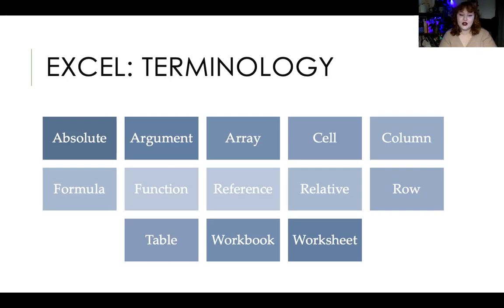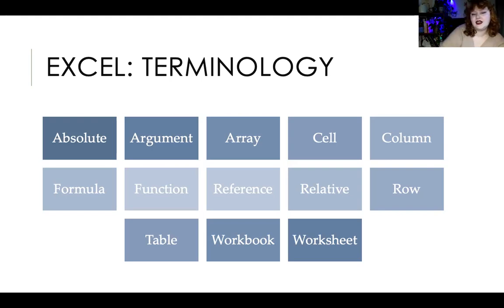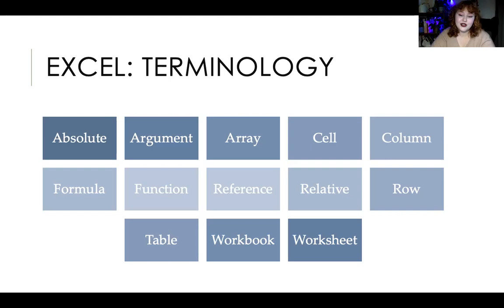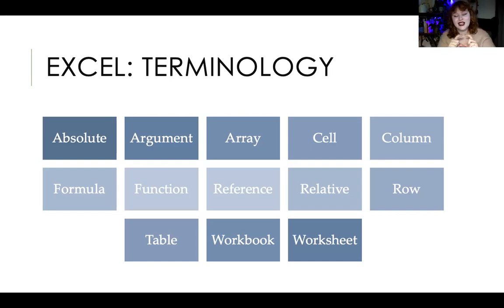A 'reference' is the name of a cell — the combination of its column letter and row number, like A1. A 'relative reference' is a normal reference (the default); these change when you move or copy the formula. 'Relative' versus 'absolute' will be discussed more shortly. A 'table' in Excel is a collection of cells formatted together that interact with each other and have headers. A 'workbook' is the whole file; a 'worksheet' is each individual page or tab within it.